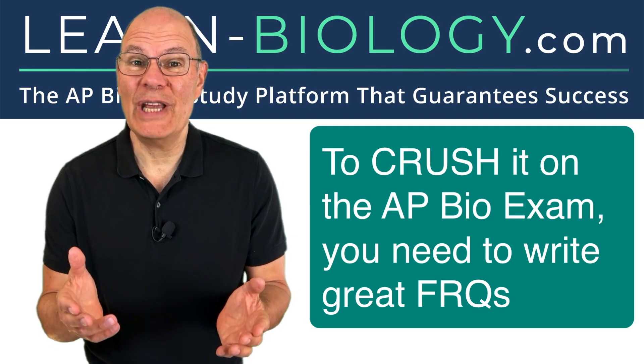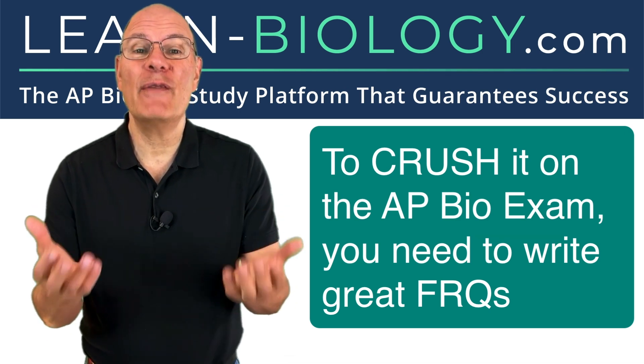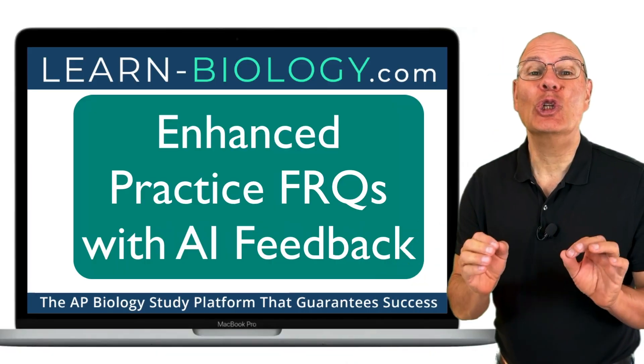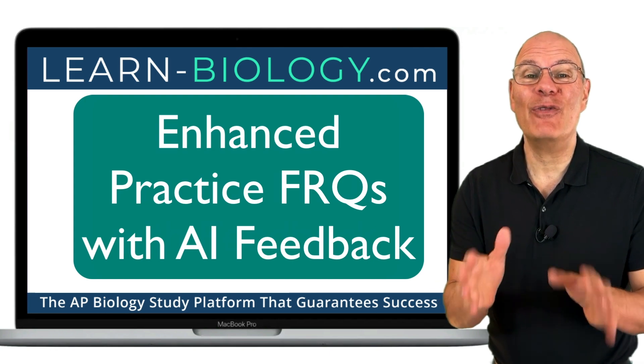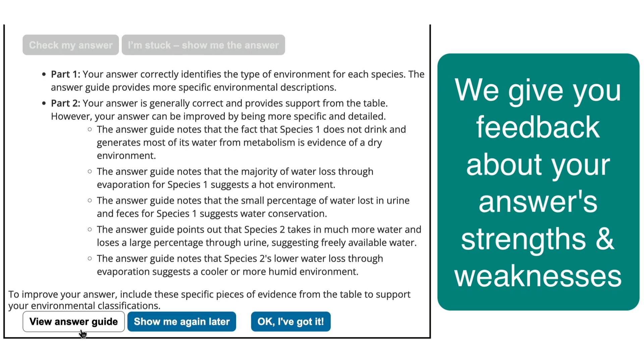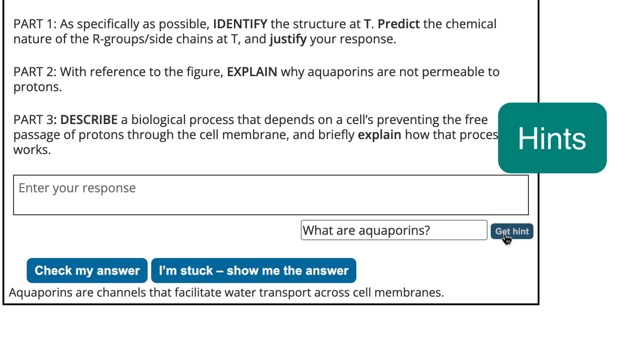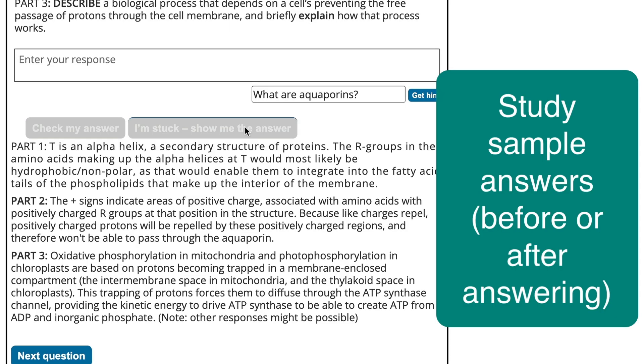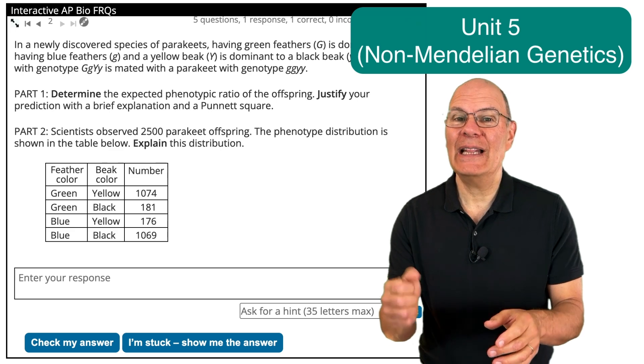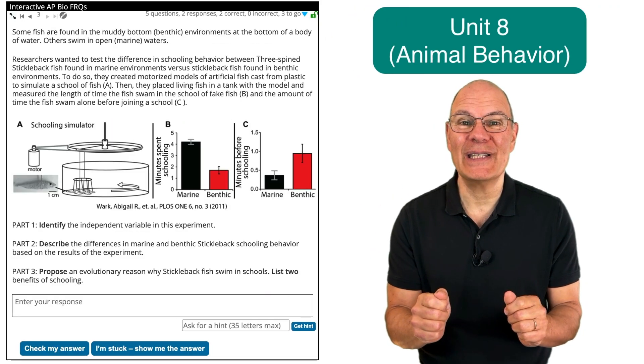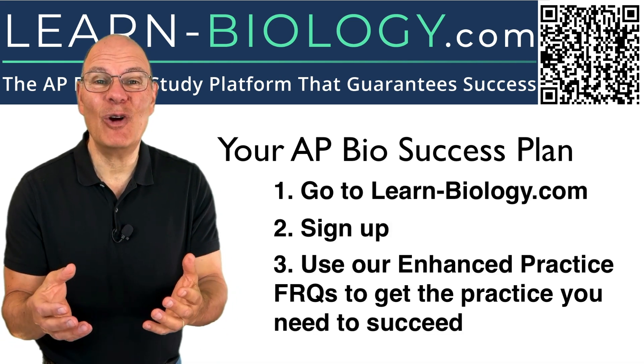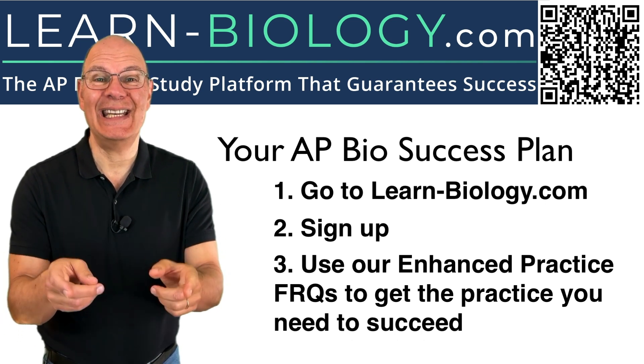If you want to crush it on this year's AP bio exam, then you're going to have to write great responses on the FRQ portion of the exam. It's half of your score. Where can you learn how to do that? On learn-biology.com with our enhanced practice FRQs. You read a prompt, you type in your response. We give you feedback telling you about your answer strengths and weaknesses. If you need help, you can ask for a hint. If you're really stuck, you can study a sample answer. We have dozens of practice FRQs, and this is the kind of practice and feedback that'll lead you to crush it on this year's AP bio exam. So here's your plan. Go to learn-biology.com, sign up, use our enhanced practice FRQs to get the practice you need to succeed.